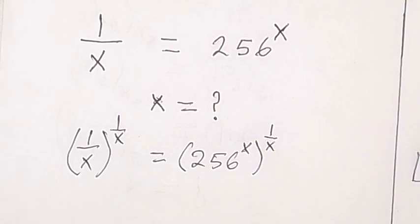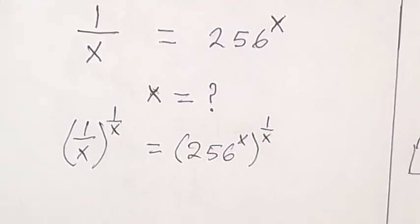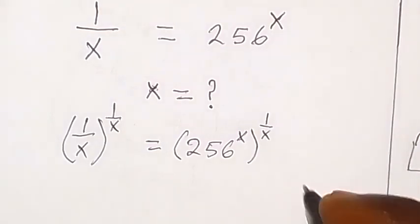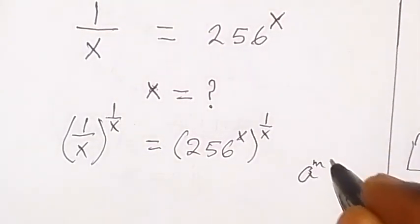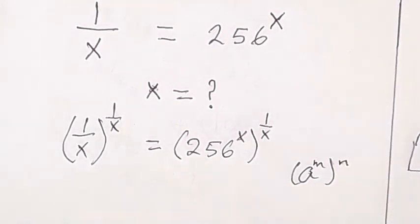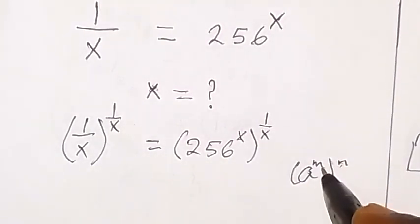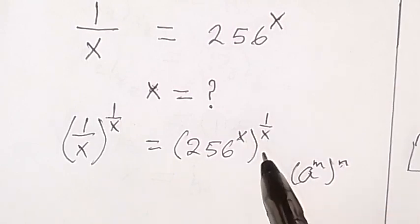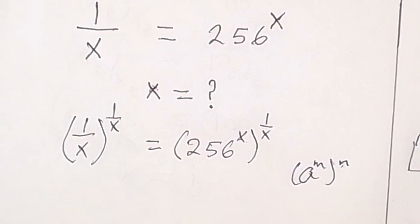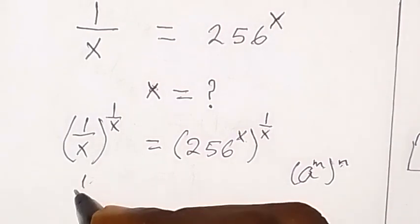And don't forget one of the laws of indices that says when we have a raised to power m, then raised to power n, these two numbers here can multiply. So when x and 1 over x multiply, of course this one will become 1 over x.